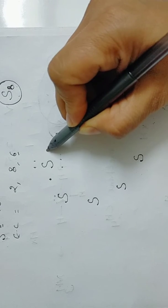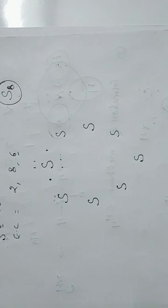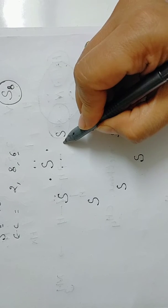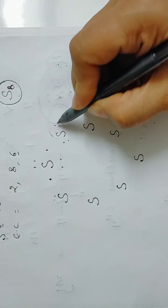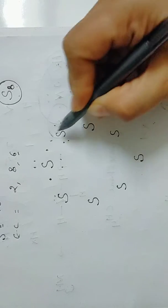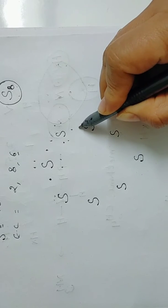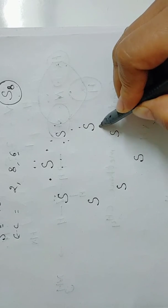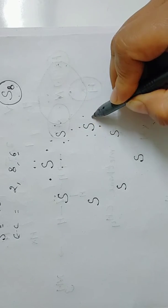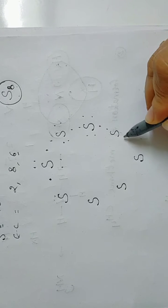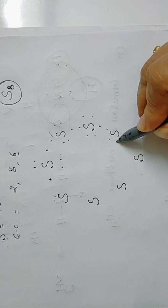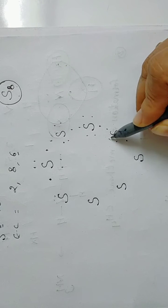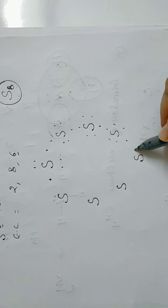Now come to this sulfur: one, two, three, four, five, and six. Again one, two, three, four, five, six. Continue placing six electrons around each sulfur atom.